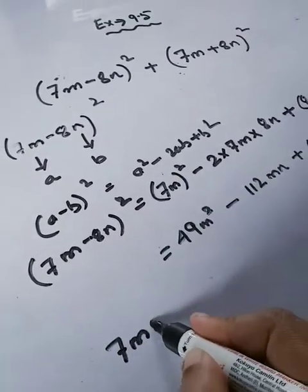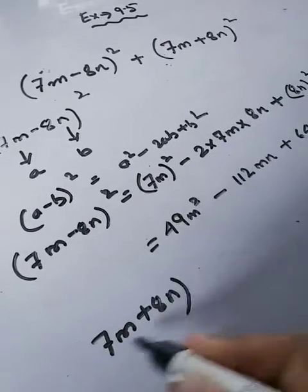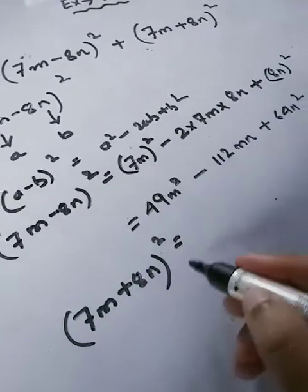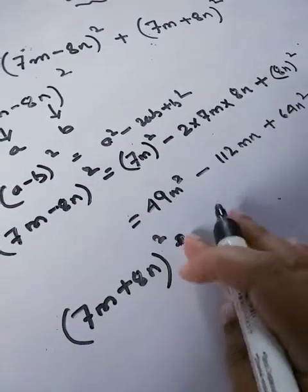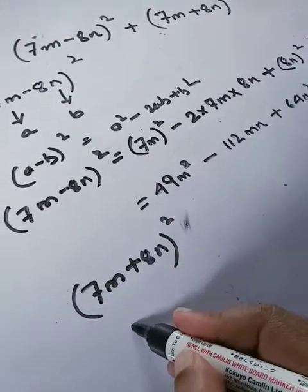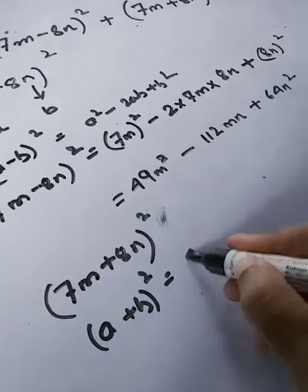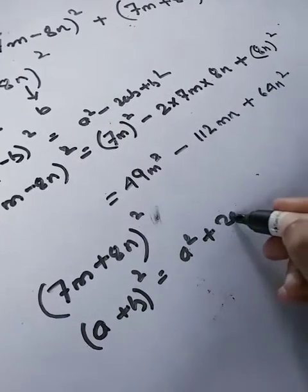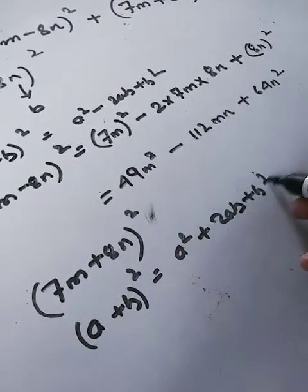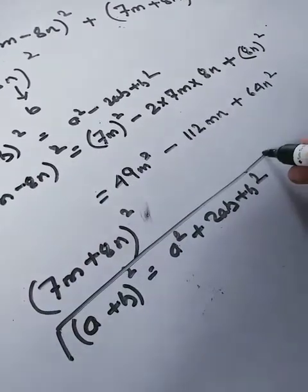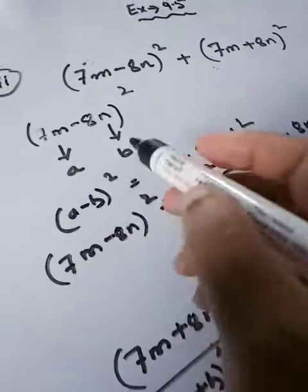Now we'll solve this one students, that is 7m plus 8n whole square. For this, which identity will follow? Yes, a plus b whole square, that is a square plus 2ab plus b square. We'll follow this identity, so we'll mark this also in this side the box.